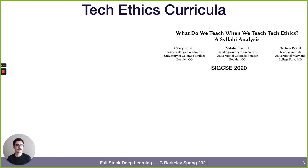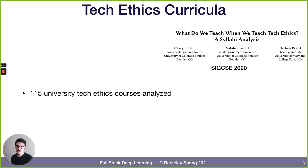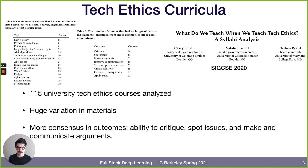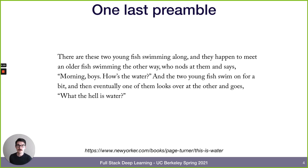When people teach tech ethics — of which ML ethics is a subset, but an increasingly large subset — what do we actually teach? This is a paper from the computer science educators conference from last year that looked at 115 different university tech ethics courses. They found a large variation in materials covered: law and policy, privacy, surveillance, philosophy, inequality, justice, AI social impact, and more. There was more consensus in outcomes — the main one being the ability to critique, spot issues, make arguments, and communicate about these issues.